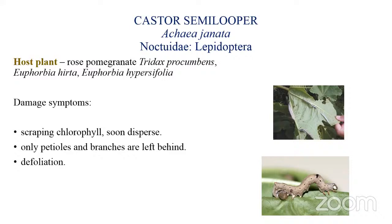The larvae start scraping the chlorophyll and soon disperse all around the plants. Sometimes the feeding is so heavy that only the petioles and branches are left behind. The caterpillar feeds on the leaves and causes complete devastation of the crops, subsequently leading to defoliation. The castor semilooper is thus a defoliator.